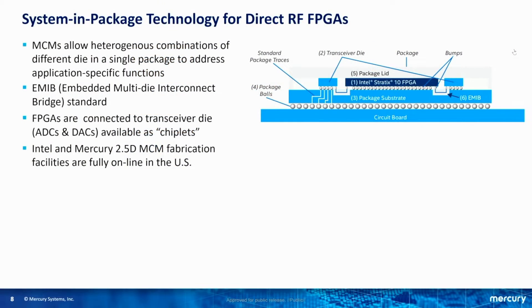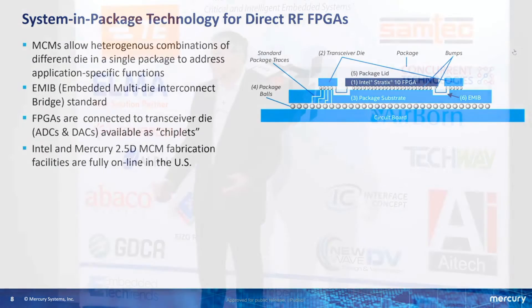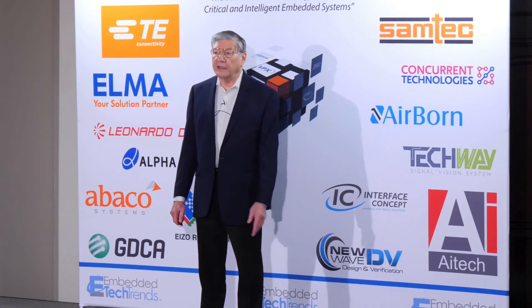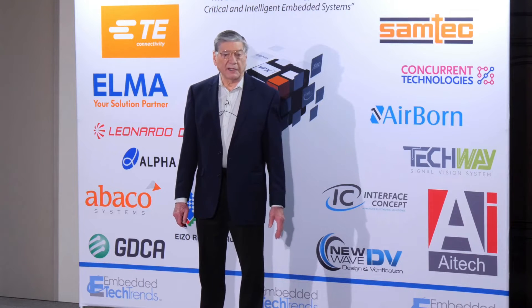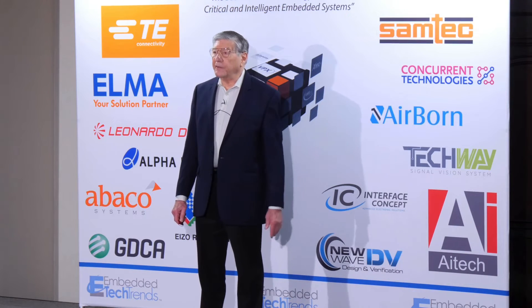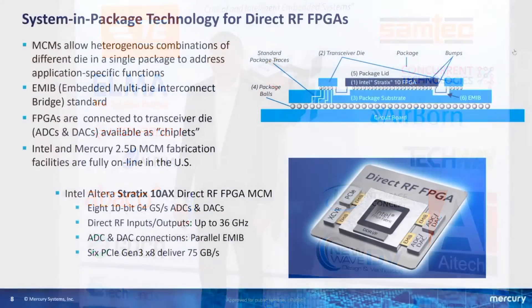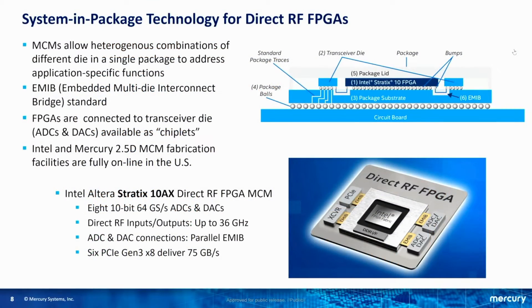In a system in package, or multi-chip module, you have the FPGA in the center with chiplets for the A-to-D and D-to-A converters connected through direct bonding on a substrate — very short, intimate direct paths. There are fabs in the U.S. now: Intel and Mercury has a fab in Phoenix providing a fully accredited U.S.-based facility, which is very attractive to the DOD.